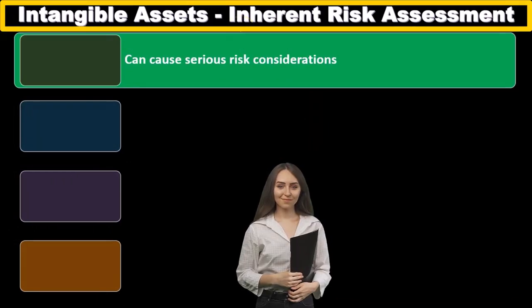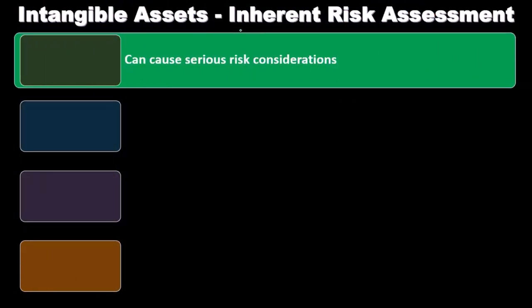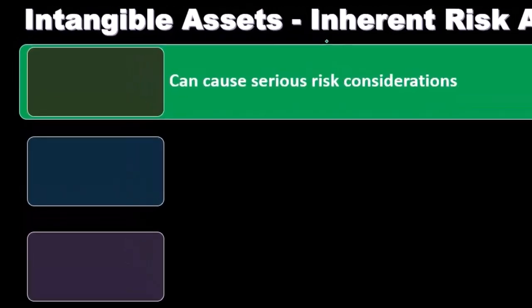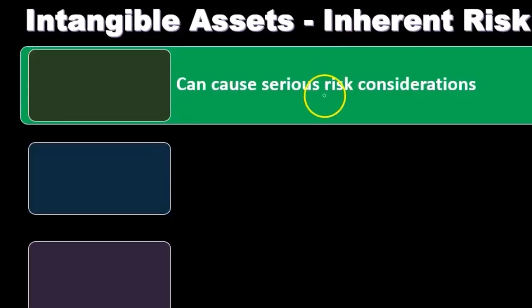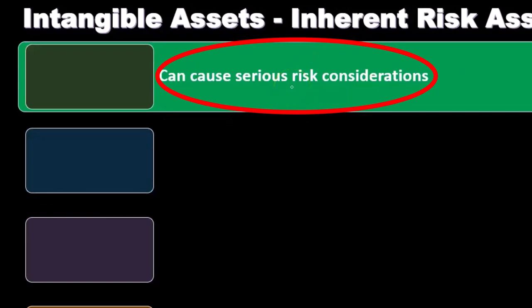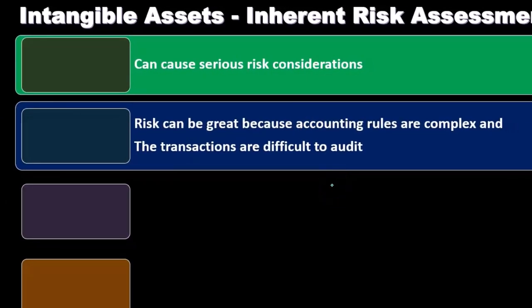Now we're going to discuss inherent risks related to intangible assets. Our goal as auditors is to think about the inherent risk and the control risk, then set the detection risk to determine how much substantive testing we need to do. The inherent risk is the risk that exists when you remove the controls — just the inherent riskiness of those items. When we think about intangible assets, they can cause serious risk considerations, because we're reporting items as assets on the balance sheet that don't have physical substance, making it difficult to verify, test, and prove their value.